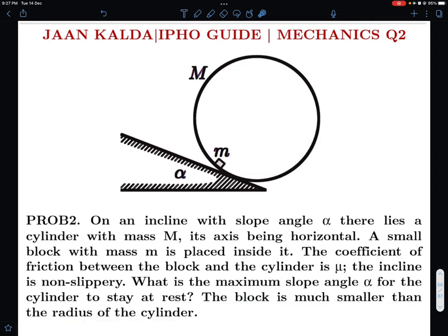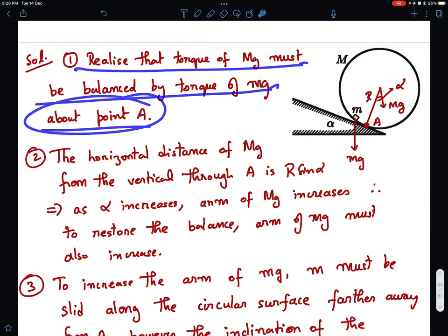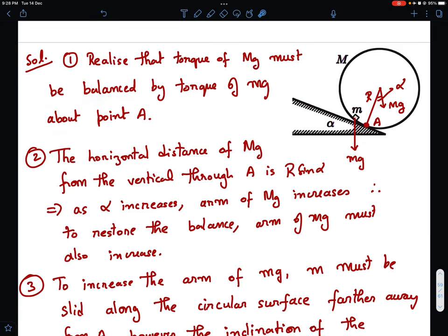If you want, you can try it out. I will get into my analysis right away. So if the cylinder is to stay at rest, we can think about the contact point where the cylinder is touching the inclined plane. And we know that about this contact point, only two forces will have torque. One is the Mg of the cylinder and the other is mg of this small mass m. And these two torques must balance. Realize that the torque of capital Mg must be balanced by the torque of small mg about point A.